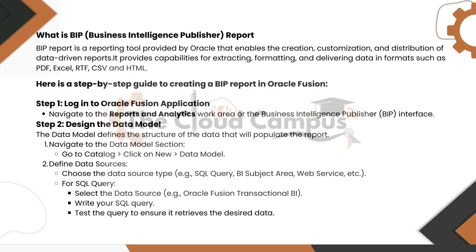Here are a few steps on how to create a BIP report. Step one: log in to Oracle Fusion instance and navigate to Reports and Analytics. We will access the report page. Then step two: design the data model. The data model defines the structure of the data that will populate the report. Navigate to the data model section, go to catalog, click on new, and you will go to data models. Define the data source — choose which source you are going to use.